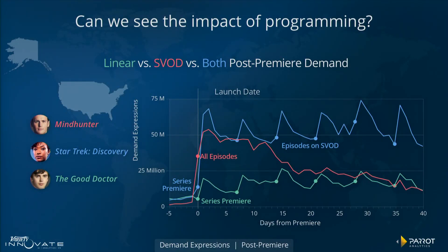Interestingly, here's another show — Star Trek, which has a hybrid linear and SVOD model. Compared to The Good Doctor, a linear show where we can see the episodic spikes and declines in demand with its episodic drops, and Mindhunter, a usual SVOD demand curve where people finish binging on it after two weekends and then there's a sharp decline — look at Star Trek Discovery. Not only does it premiere high, but it actually sustains its high demand with its episodic drops.